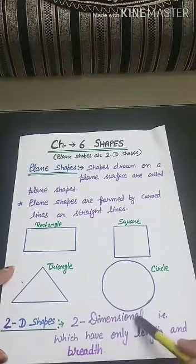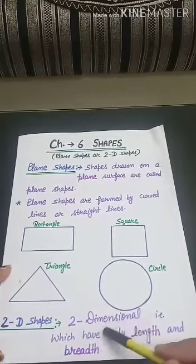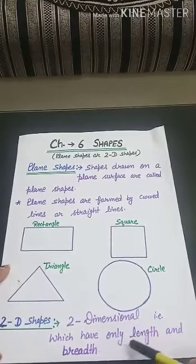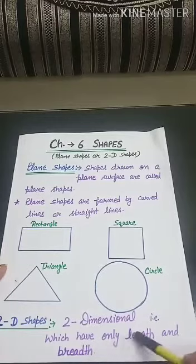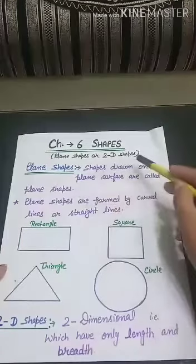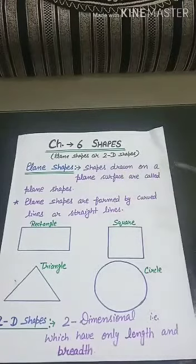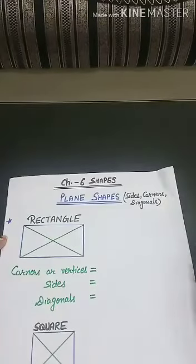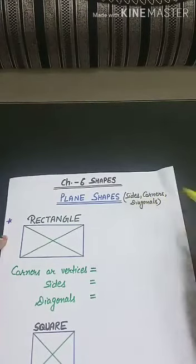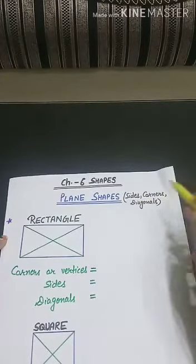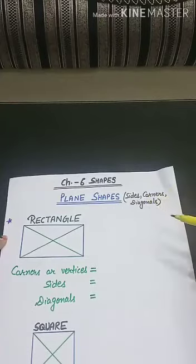D means dimensional. 2D means two dimensional. Two dimensions means shapes which have only length and breadth. So plane shapes and 2D shapes are both the same. Now we will learn about the sides, corners and diagonals of these plane shapes — how many sides, how many corners, and how many diagonals each shape has.